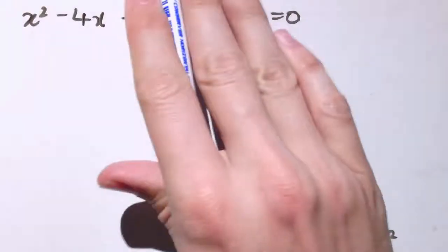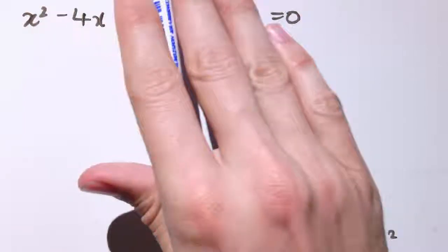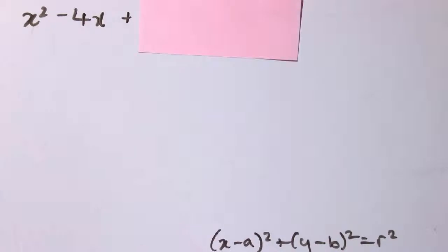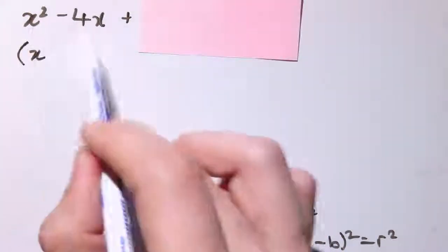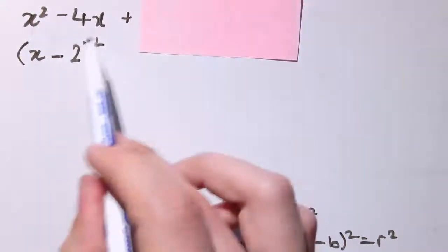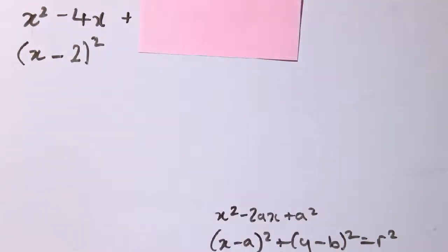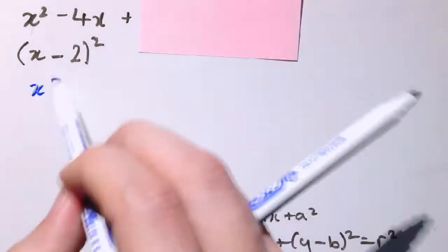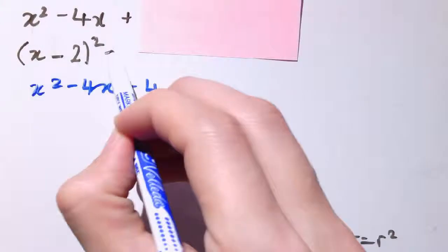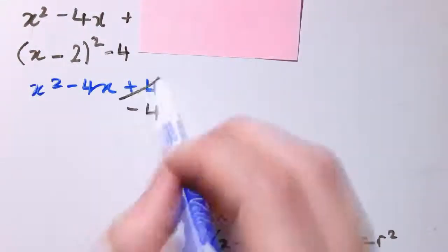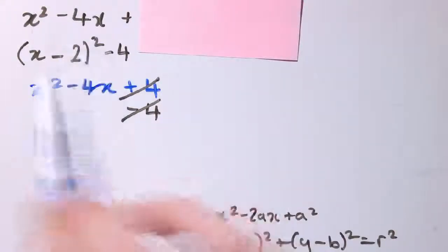I'm going to ignore everything else apart from the things with x in them and complete the square in x squared minus 4x. Remember, completed square form works on the basis that x minus a squared equals x squared minus 2ax plus a squared. So the thing inside the bracket is half of this coefficient — this is 2a, this is a. So it would be half of minus 4, giving us x minus 2 squared. If I multiply out x minus 2 squared, I get x squared minus 4x plus 4. So I need to subtract this extra 4, leaving just x squared minus 4x.